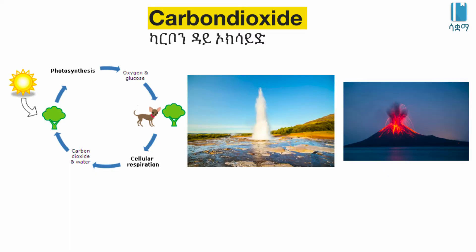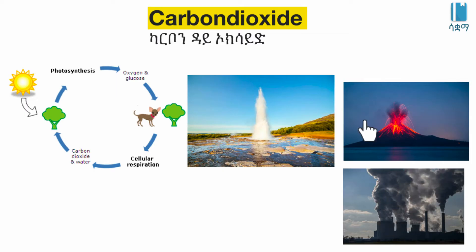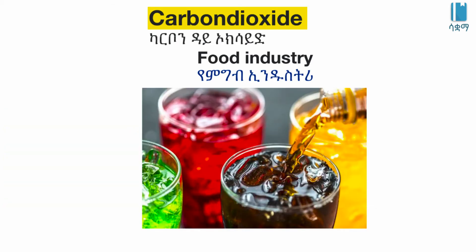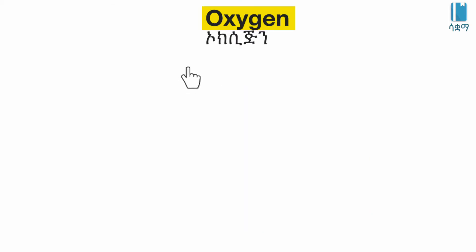Carbon dioxide is made up of carbon dioxide and they use the acid. It is made up of gas and use the proton dioxide. It is made up of carbon dioxide, but the carbon dioxide is made up of carbon dioxide.